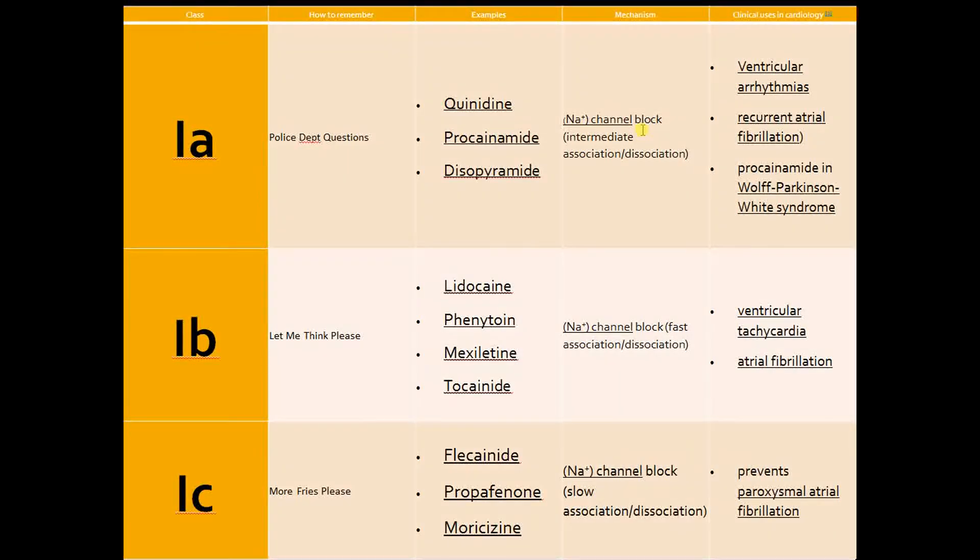Class 1B includes four medications. This is probably the most underutilized. These include lidocaine, phenytoin, mexiletine, and tocainide. The mnemonic to remember is 'Let Me Think Please.' Once again, same category as Class 1A: ventricular tachycardia and atrial fibrillation.